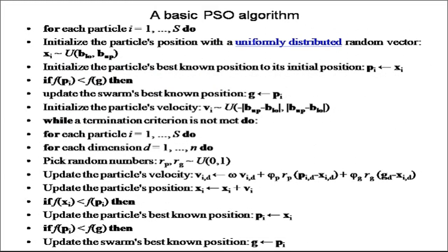This slide shows how the algorithm works. First stage: for each particle i from 1 to s, initialize the particle position with a uniformly distributed random vector. Initialize the particle's best known position to its initial position. Update the swarm's best known position. Initialize the particle velocity. While a termination criteria is not met, repeat the following stages: update the particle velocity, update the particle position. If f(xᵢ) < f(pᵢ), then update the particle's best known position. If f(pᵢ) < f(g), then update the swarm's best known position.